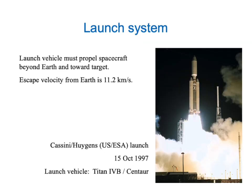One thing we're going to have to think about is our launch system — the rocket that takes our spacecraft from Earth and sends it on its way to the target planet. It had better be a pretty powerful rocket, because the escape velocity from the Earth is 11.2 kilometers per second, so it's a much more challenging problem than simply putting something into orbit. The picture here is a picture of the Cassini-Huygens launch to the planet Saturn. Cassini was a U.S. probe; Huygens was a European Space Agency probe, and they were a combined mission, launched on a Titan IVB Centaur, one of the largest rockets operating today.